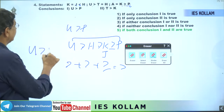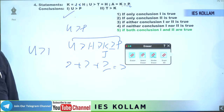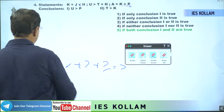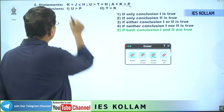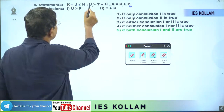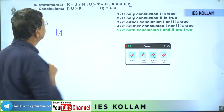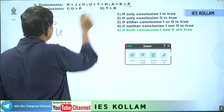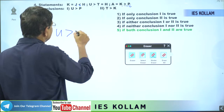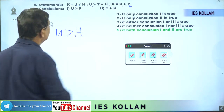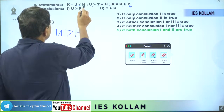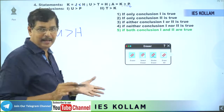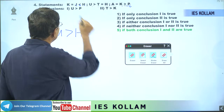Very simply we can identify: u greater than p is correct. Starting from u, u greater than t — and instead of t, since t and h are the same, we can take h. When we are starting from h, how can we connect to k? Since k and j are the same, either we can take j or k. Therefore h can be taken as connected to k.